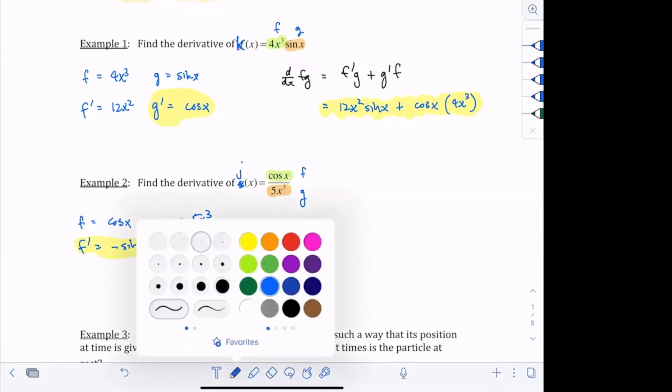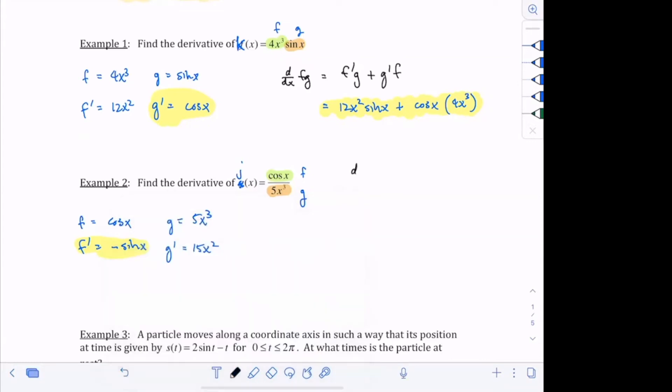So now we just apply the quotient rule. The quotient rule says that the derivative of f divided by g is going to be equal to f prime g minus g prime f all over g squared. So we just got to write it in the relevant pieces.